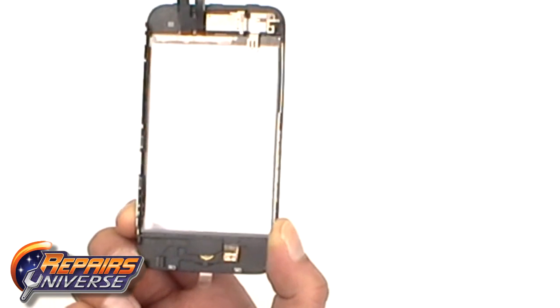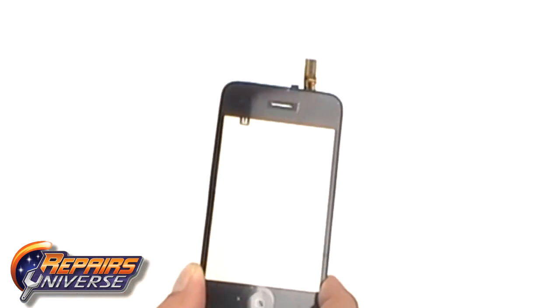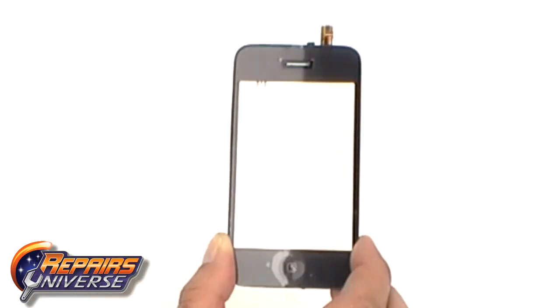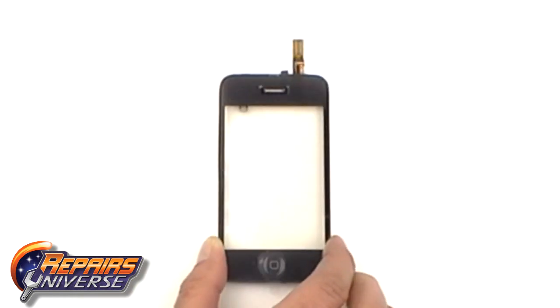This makes the repair much easier, opposed to transferring the original frame and home button. If you have a cracked or badly scratched outer glass screen, then replacing this part is your solution.